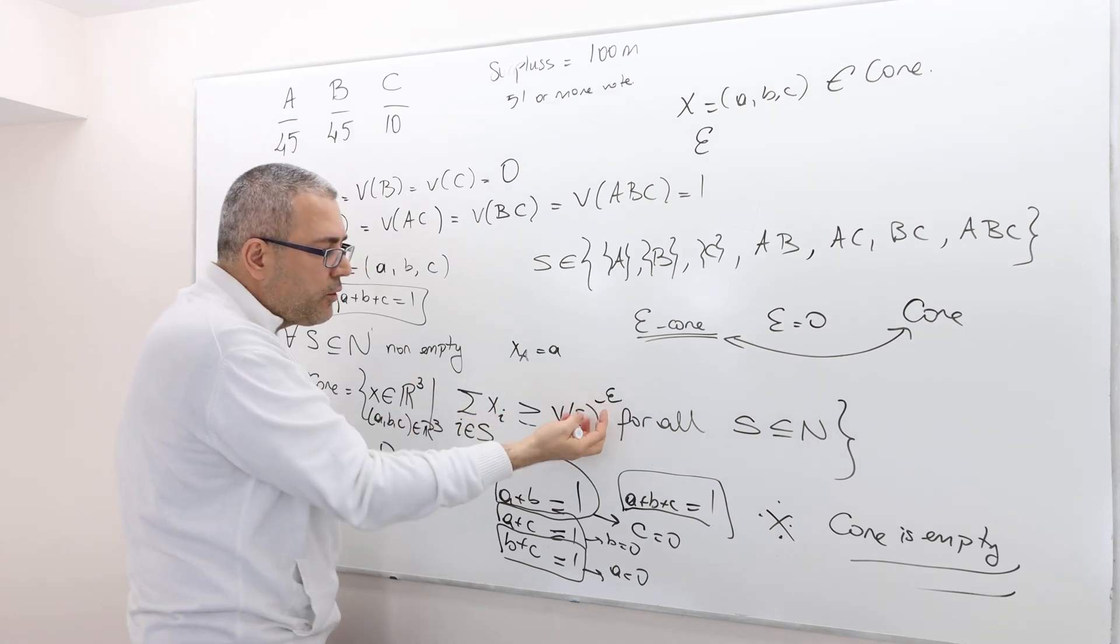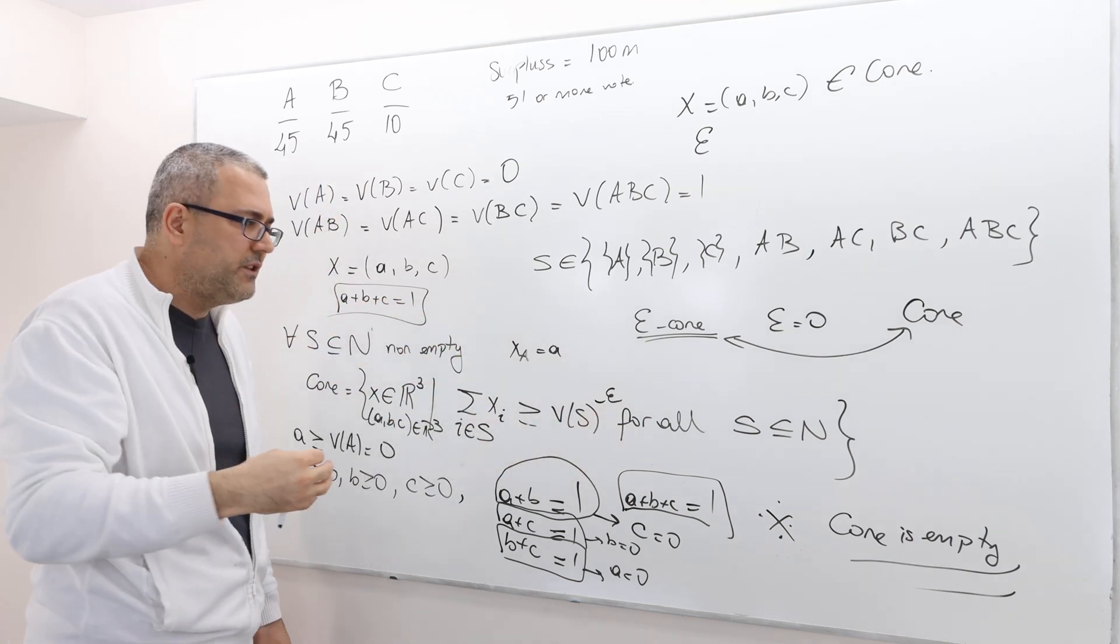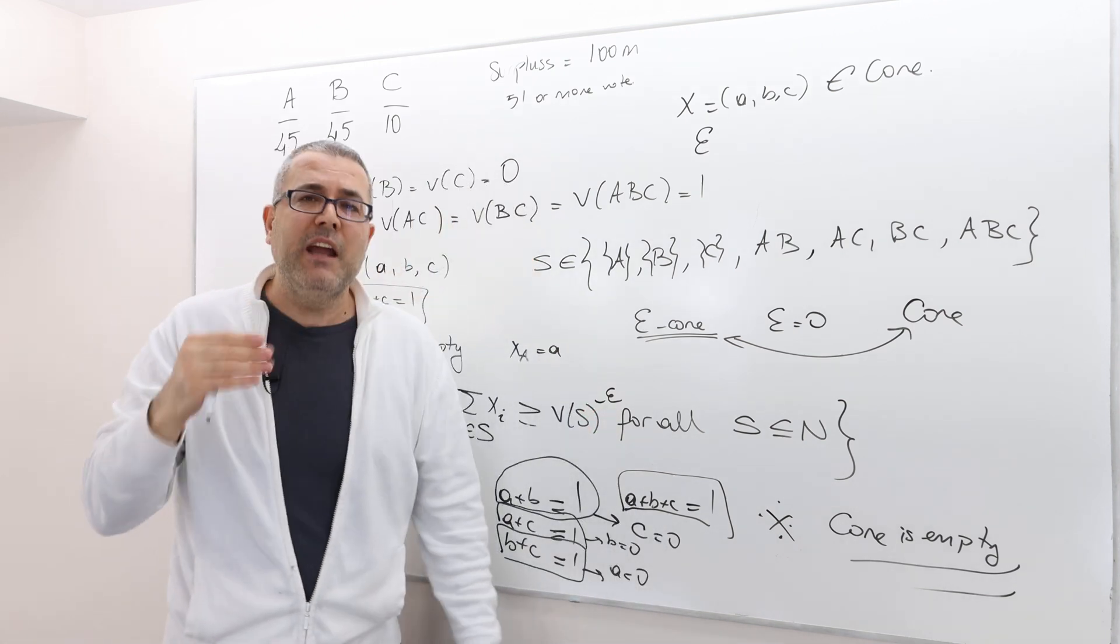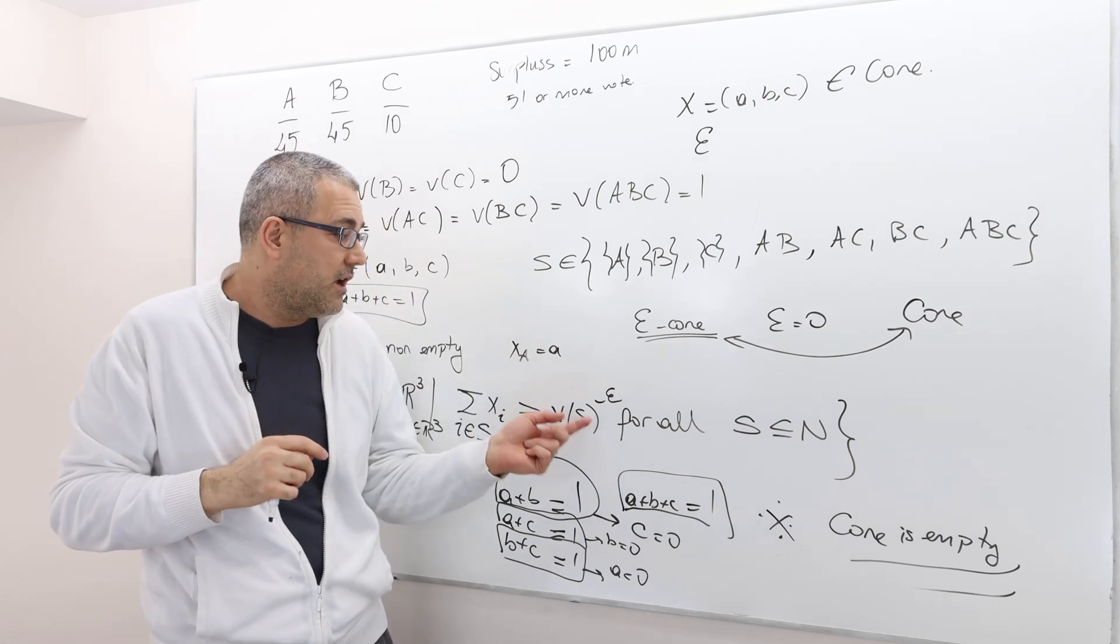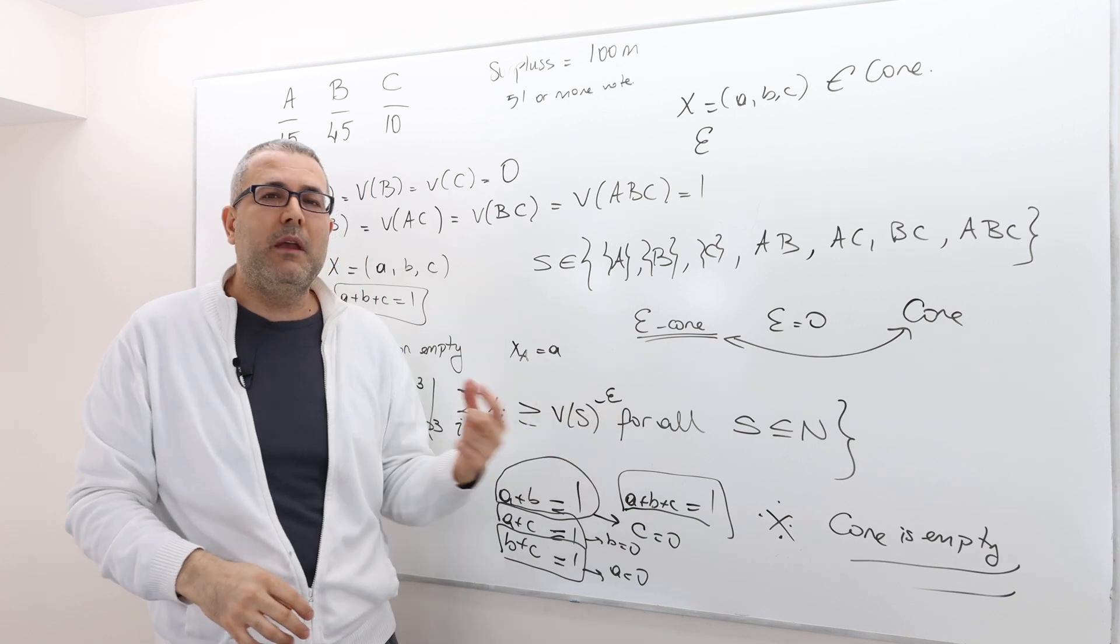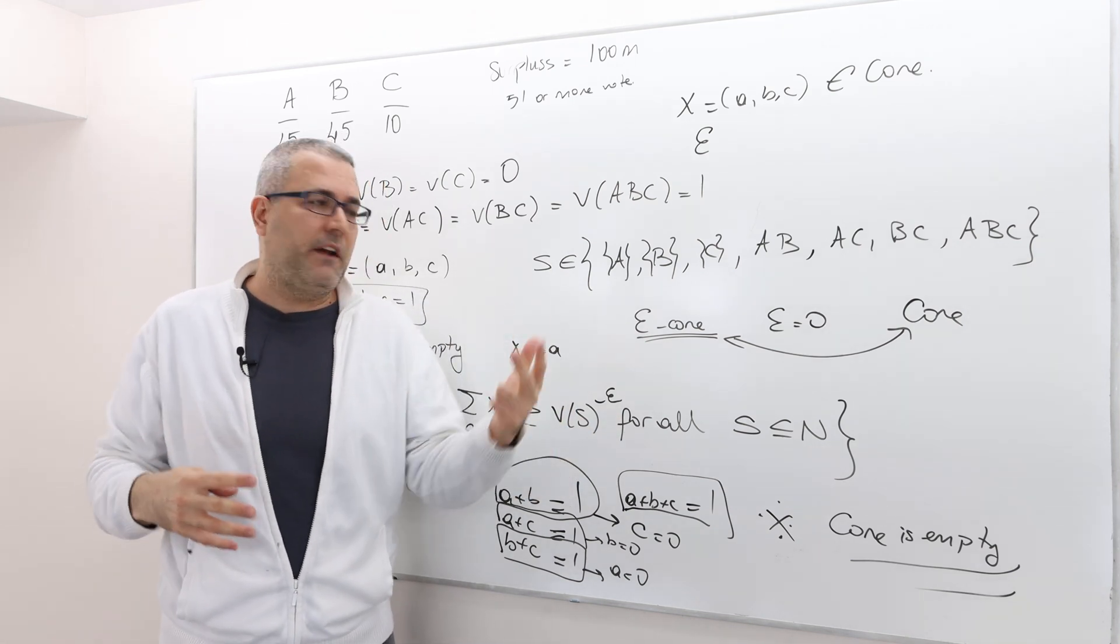But when I reduce this, I know they have incentive to deviate, but then think of this epsilon as like a punishment if they deviate. I don't know if it is a good intuition. So if you deviate, somebody is going to punish them. Maybe this is a moral of punishment, whatever.